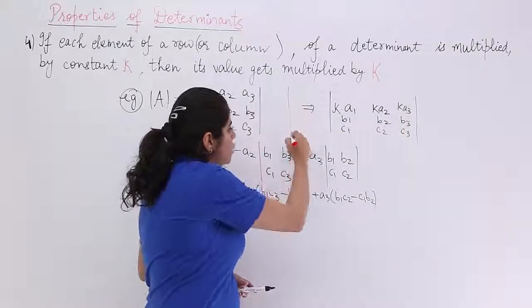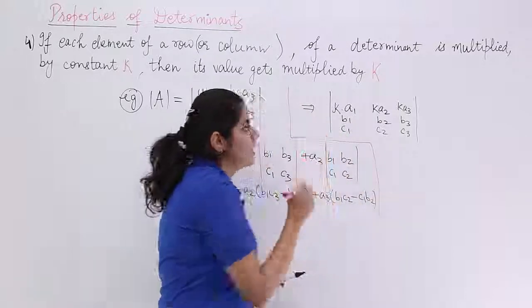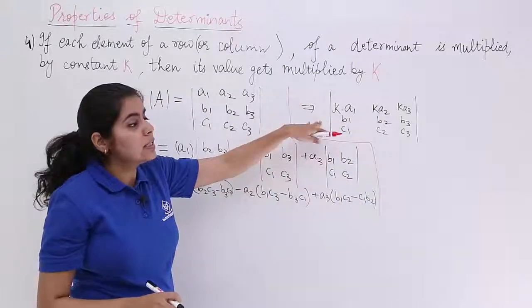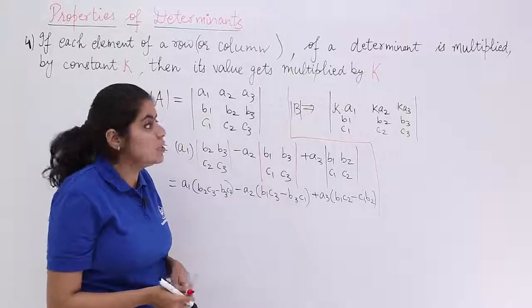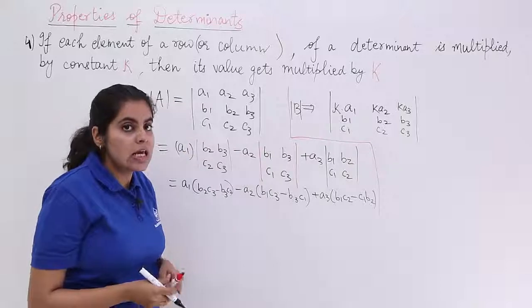Now, since we need to understand both these properly, let's make a separation. This is a determinant, a new determinant. Let's name it as B.